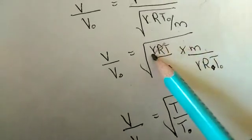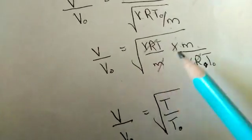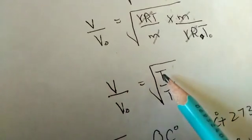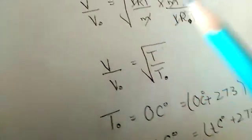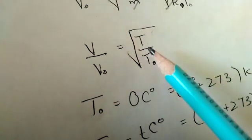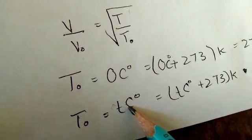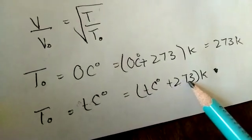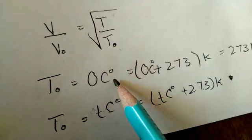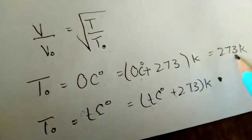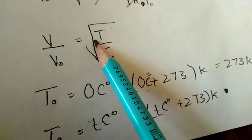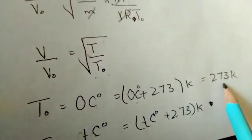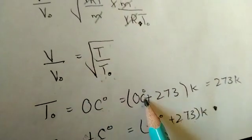Now gamma R cancels with gamma R, and M cancels, so the remaining expression is V divided by V0 equals the square root of T divided by T0. Here T is any centigrade temperature, which in Kelvin is T_centigrade plus 273. T0 is 0 centigrade, which in Kelvin is 273. We replace T with T_centigrade plus 273 and T0 with 273.